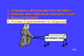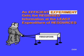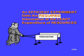Here is the definition of efficiency: an efficient experiment gets the required information at the least expenditure of resources. This is an exact definition and has three elements of an efficient experiment. The first is experiment — there's a big difference between a test and an experiment. Second, we get the required information: not too much, not too little, just right.